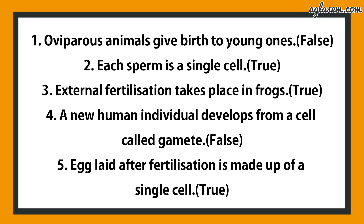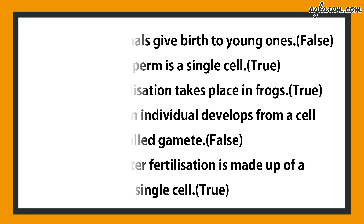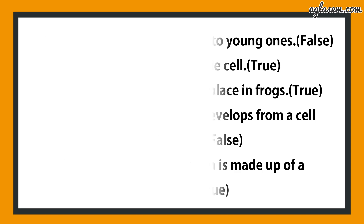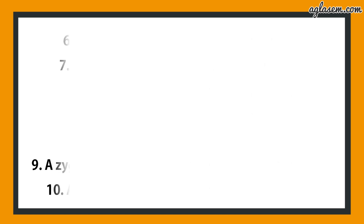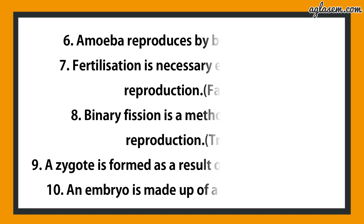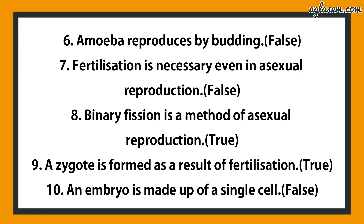Third: external fertilization takes place in frogs — answer is true. Fourth: a new human individual develops from a cell called gamete — answer is false. Fifth: egg laid after fertilization is made up of a single cell — answer is true. Sixth: amoeba reproduces by budding — answer is false.